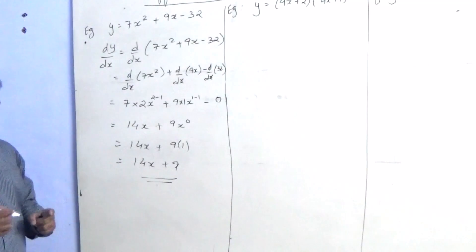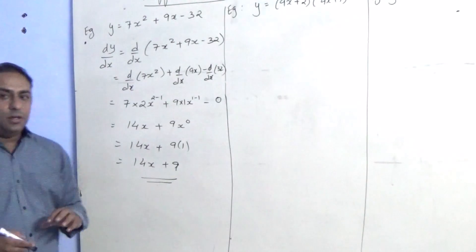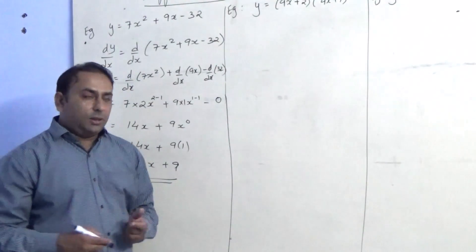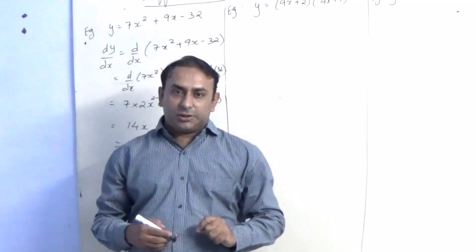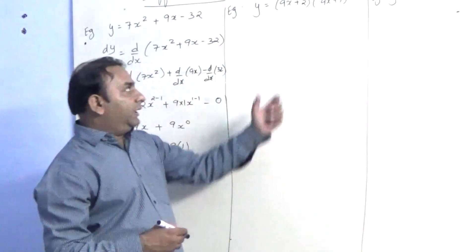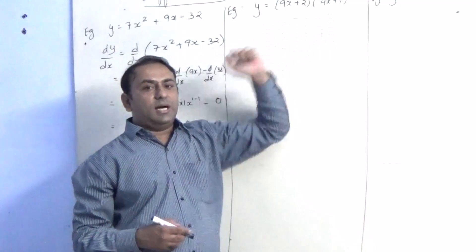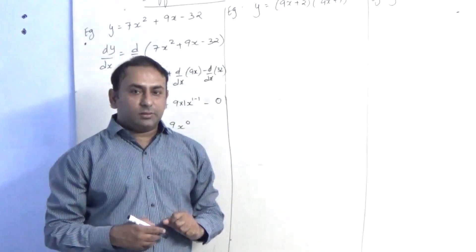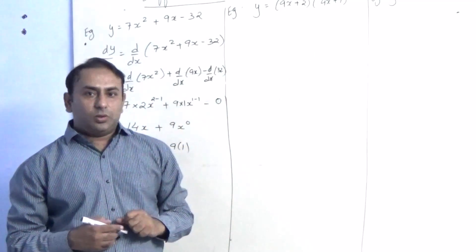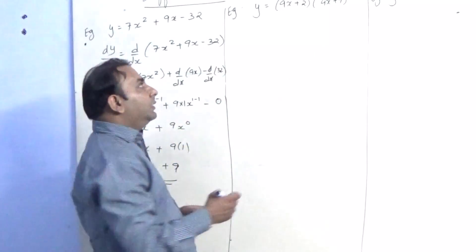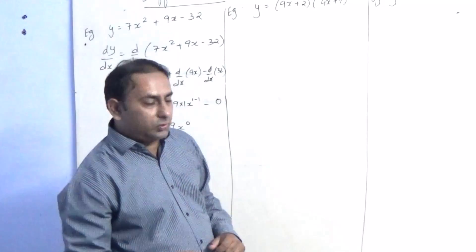Now after this simple sum, we will go to another sum that is for multiplication. Here two terms are in multiplication, so we will apply the multiplication rule, or we can call it the product rule.